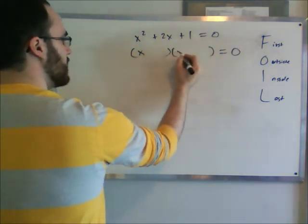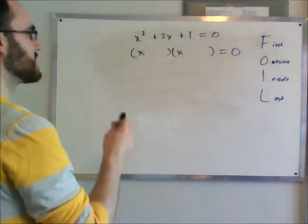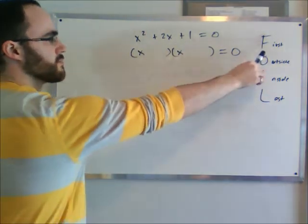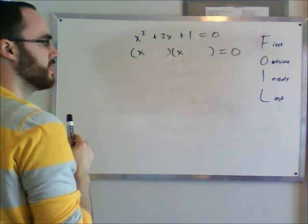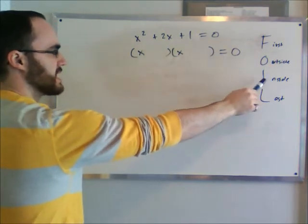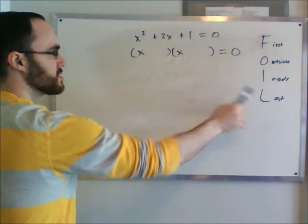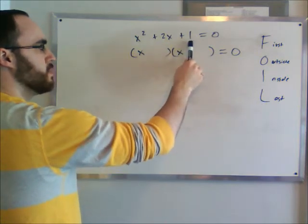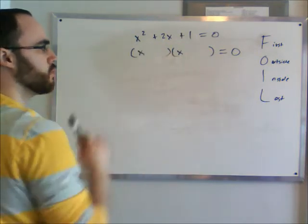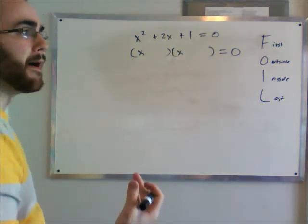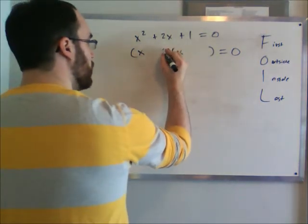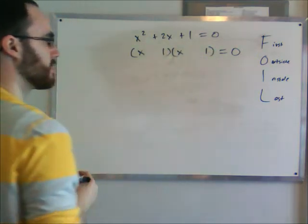The x's always have to be on the left, because in the end we're going to do the FOIL. The first term is going to be x times x, which is going to be x squared. The outsides is next, and the insides and the last. So let's talk about the last first. We have to put numbers here that multiply together to give 1. The only two numbers that multiply together to give 1 are 1 and 1. So we know that a 1 has to go here, and a 1 has to go here.